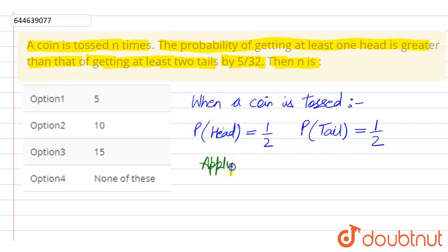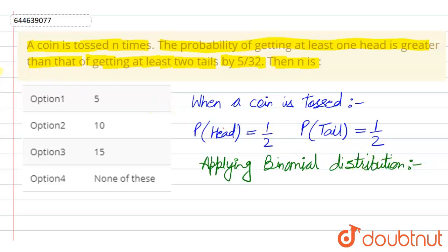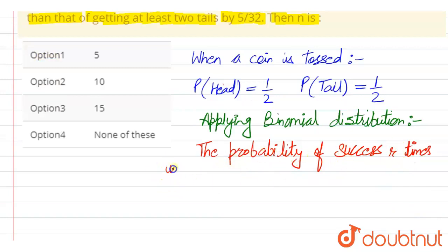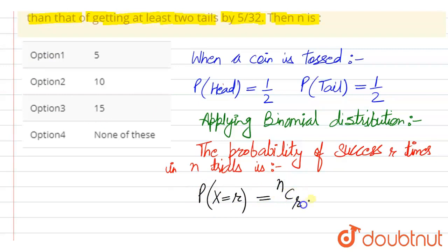Applying binomial distribution: the probability of success r times in n trials is given as P(r) = nCr × p^r × q^(n−r), where q equals 1 minus the probability of success, so q is the probability of failure in each trial.